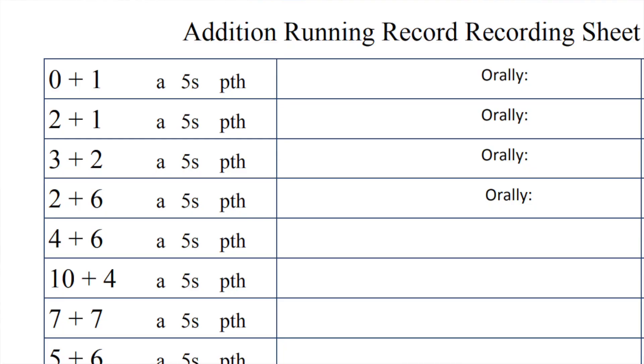You first start out by giving kids the list of problems, and they are picked on purpose — you can download the one for addition and the one for multiplication below. You're assessing: are they automatic, which you circle A; if it took around five seconds, you circle 5S; if it was prolonged thinking time, you circle PTH.